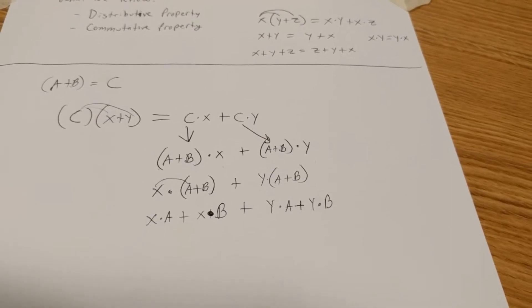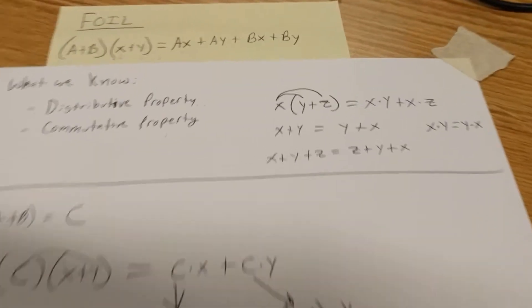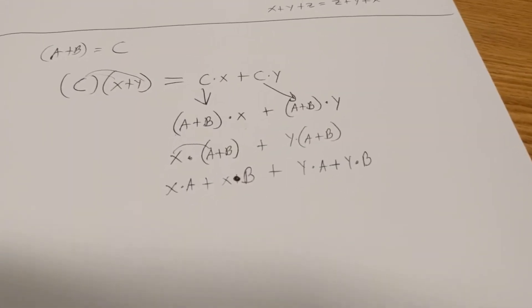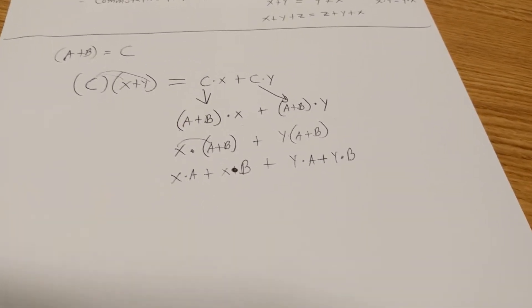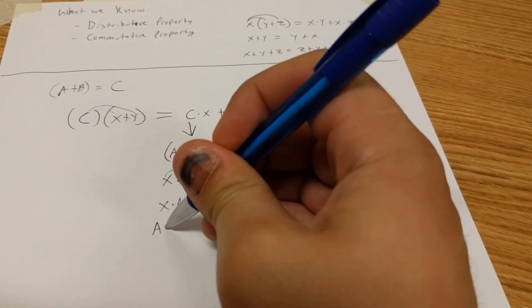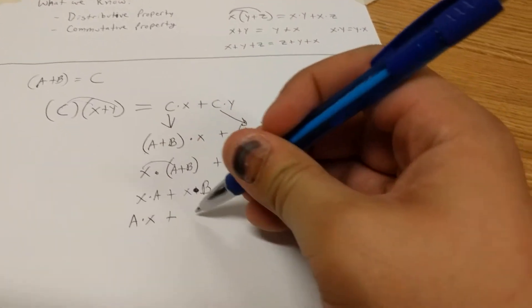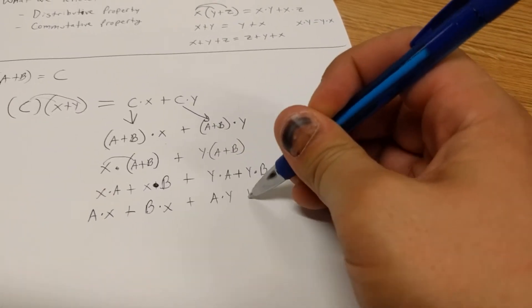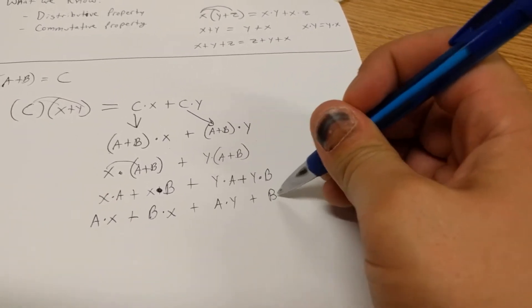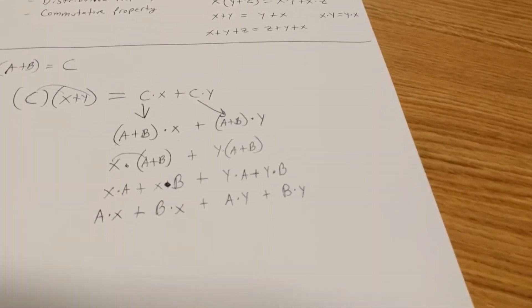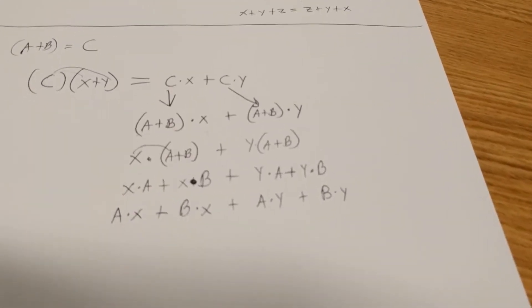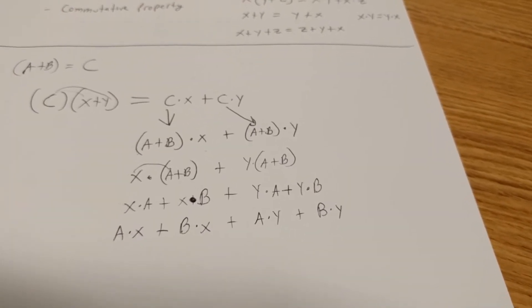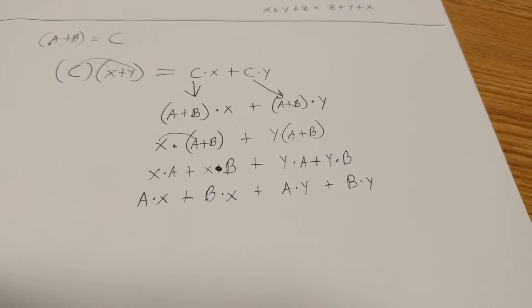So we get x times a plus x times b plus y times a plus y times b, basically using all the rules we already set up. Next up we need to switch some of the orders so it looks more like our original equation that we want to prove.